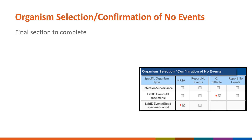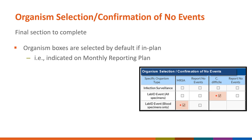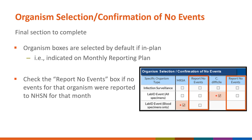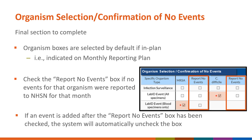The final section to complete on the denominator form is the organism selection box. If you've selected the correct organisms on the corresponding monthly reporting plan, the checkboxes on the table will be automatically checked by default as shown on the slide. Next to each organism, there is a checkbox to select if there were no events identified for that organism during the month. If you add an event into NHSN after checking the report no events box, the system will automatically uncheck the box for you.